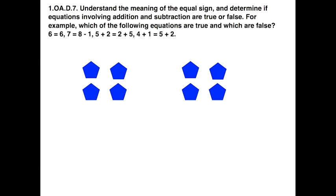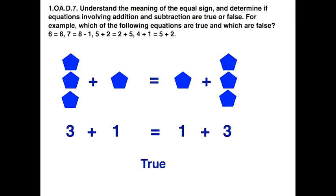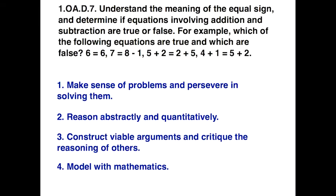Let's do another example. Starting off with 4 equals 4, on the left-hand side make it 3 plus 1, and on the right-hand side make it 1 plus 3. Just like before, a strength here is that you can actually lay the foundation for the commutative property without ever using that terminology — 3 plus 1 is equal to 1 plus 3. Same groupings, just in a different order.